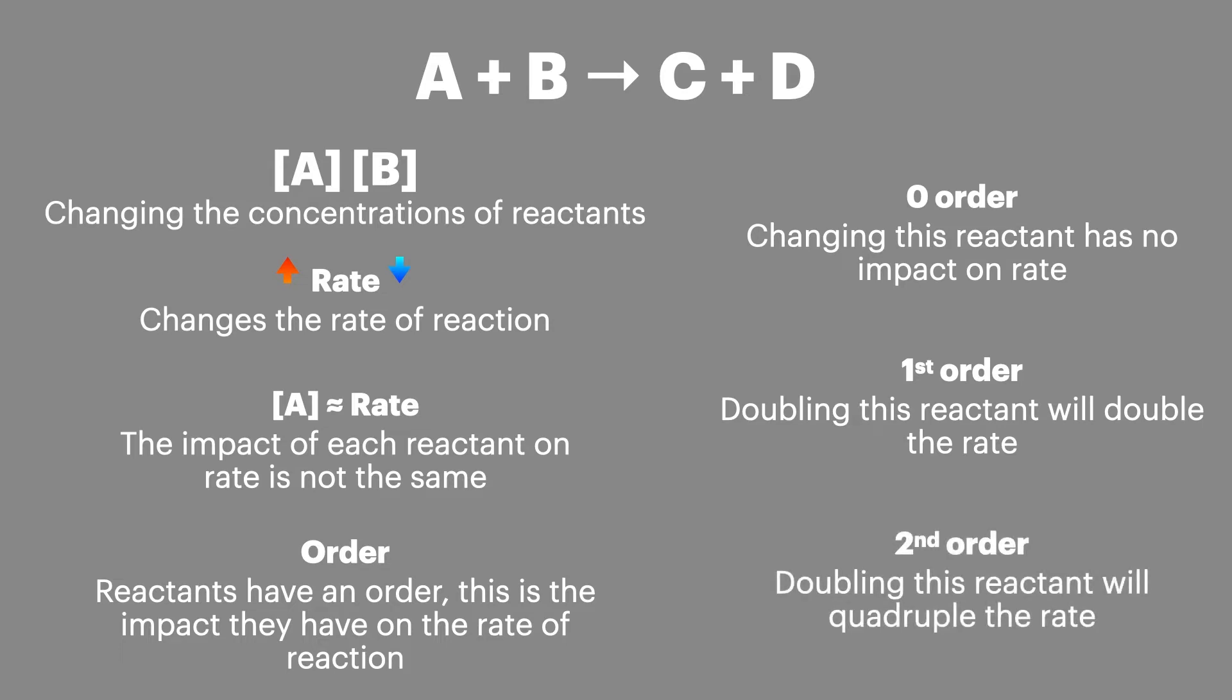And finally a second order reactant is proportional to the square of the reactant so if the reactant is doubled then the rate will be quadrupled.